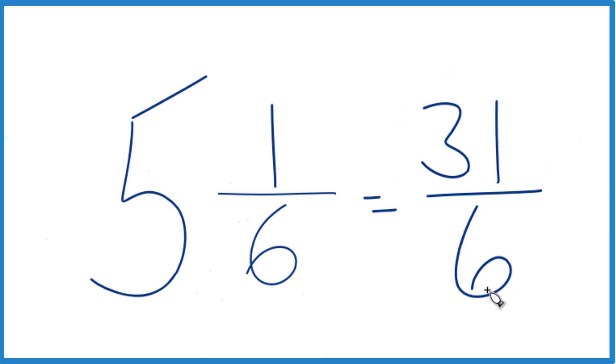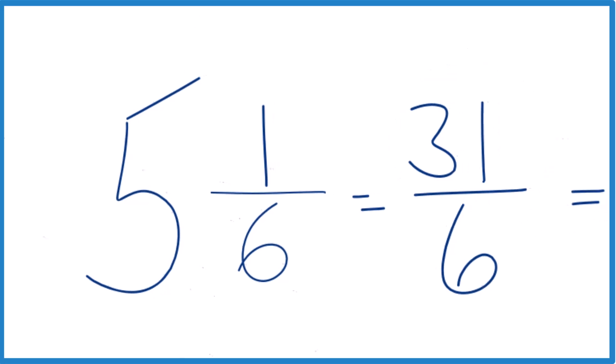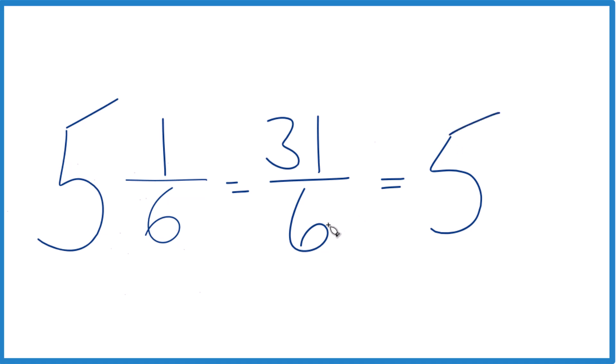You can even check your work here, because 6 goes into 31, 5 times 6, that would be 30, then we just have 1 left over, bring the 6 across, 5 and 1/6, and that's the mixed number we started out with.